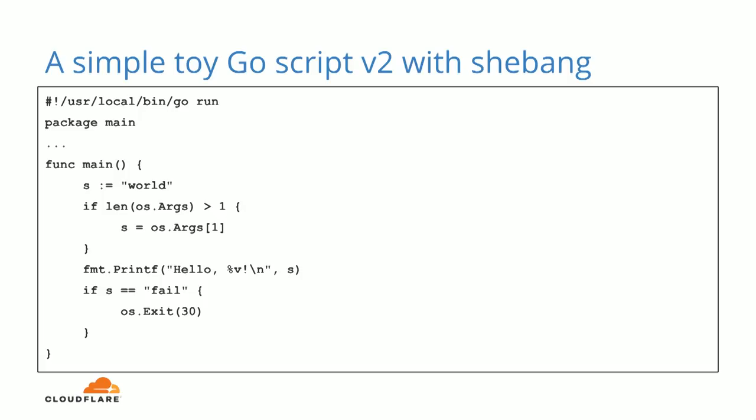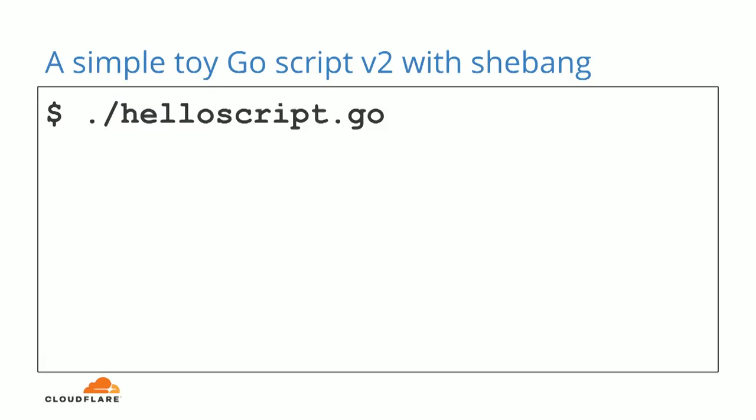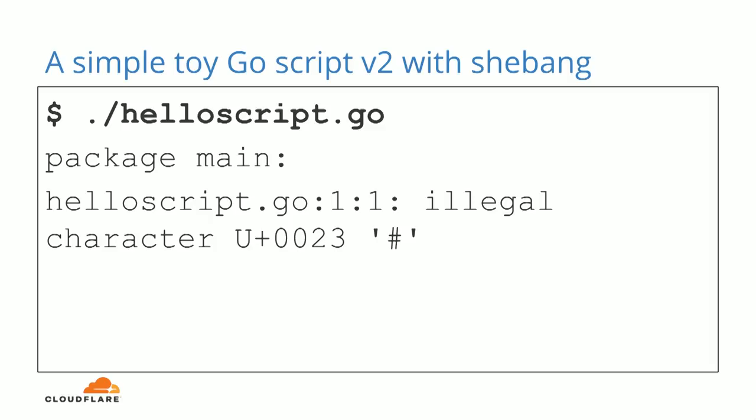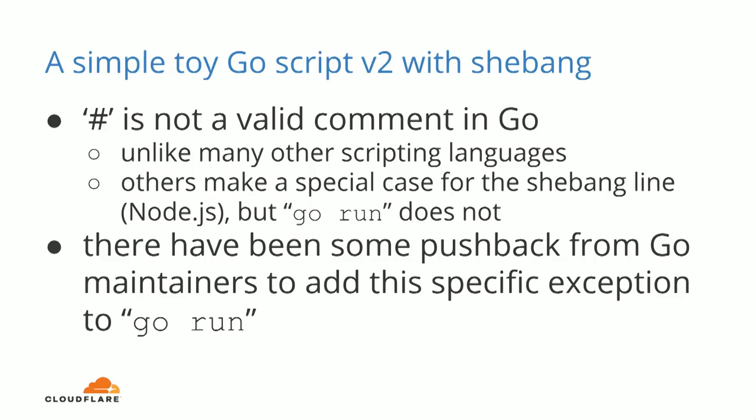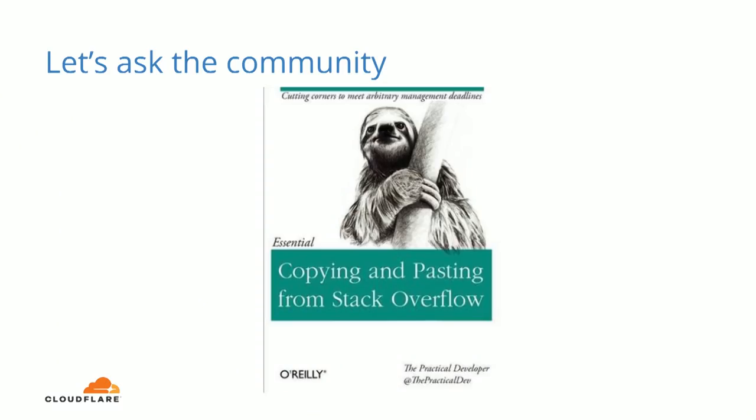Let's add a shebang line to our toy script — we just add go run. But if you try to execute this file, it will fail. Why? Because unlike many other languages, a hash is not a valid comment in Go. And people have been asking for this feature: can we make an exception just for the shebang line? The Go maintainers said no for some reason — there is a lengthy thread, you can Google it. So when official maintainers don't want to support a feature, we go to the community.